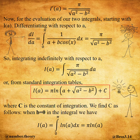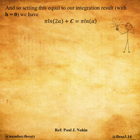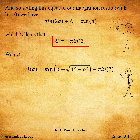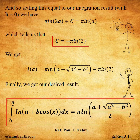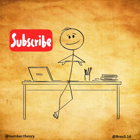When b equals zero in the integral, we have. And so setting this equal to our integration result, which tells us that, we get. Finally, we get our desired result.